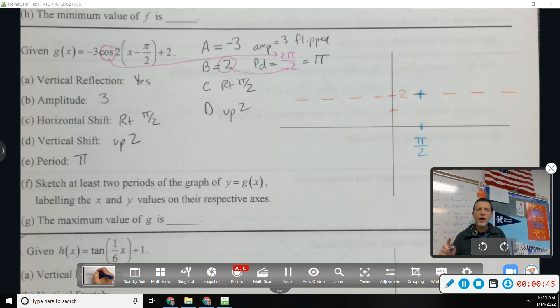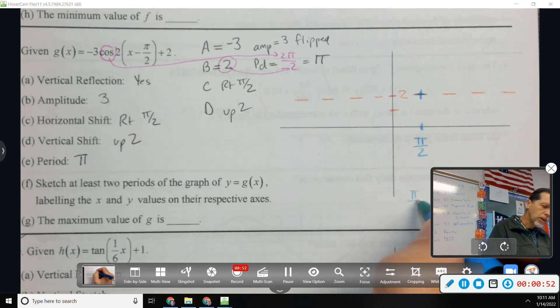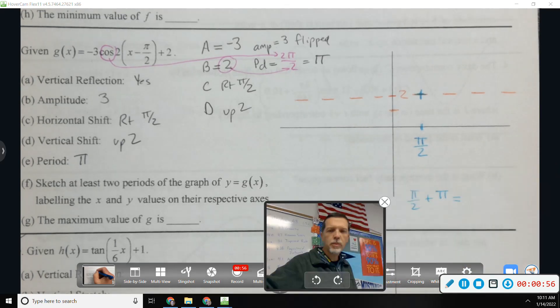The period is pi, so I need to go pi away from pi over 2. So where will that land me if I start at pi over 2 and add pi? That would put me at 3 pi over 2.